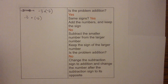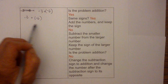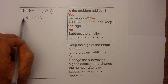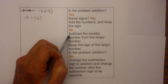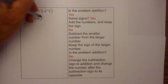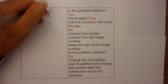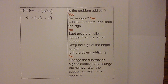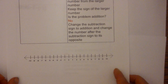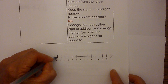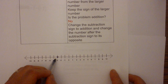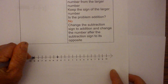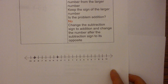Now we just apply the addition rules. Is the problem addition? Yes. Same signs? Yes. Add the numbers and keep the sign. Six plus three is nine and they are both negative, so the answer is negative nine. On the number line: we start at negative three and, since it's a negative number, go to the left — one, two, three, four, five, six — giving us negative nine.